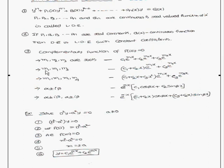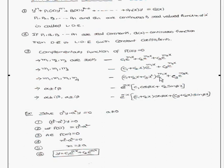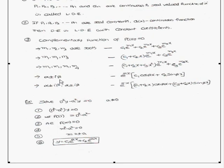If you get repeated roots m1, m1, and another root m3, then the complementary function is (c1 + c2·x)·e^(m1·x) + c3·e^(m3·x). If you get roots m1, m1, m1, m1 (four repeated roots) and another root m4, then the complementary function is (c1 + c2·x + c3·x²)·e^(m1·x) + c3·e^(m4·x). If the roots are α ± iβ, then the complementary function is e^(α·x)·(c1·cos(β·x) + c2·sin(β·x)).